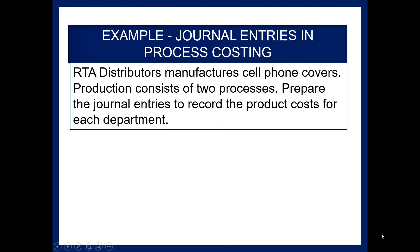Now let's take a look at the journal entries in a process costing environment. This is based on our example that we previously worked for RTA Distributors. RTA Distributors manufactures cell phone covers, and production consists of two processes. We'll prepare the journal entries to record the product costs for each department.